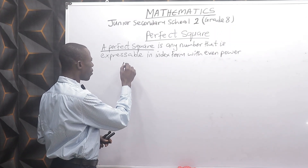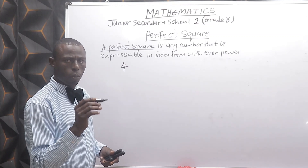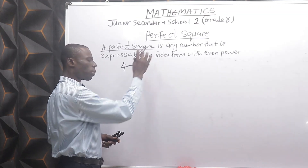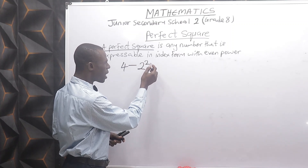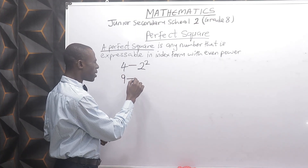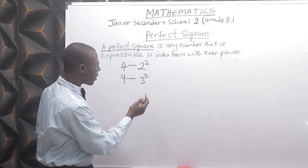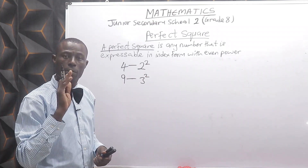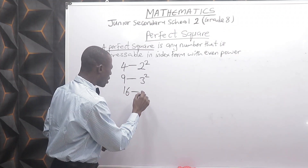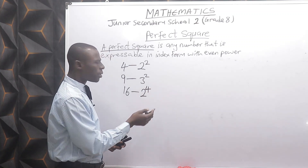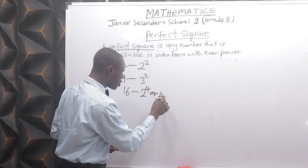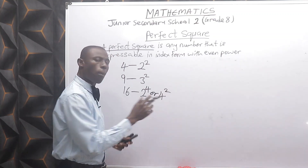An example is 4, which is a perfect square because it is expressible in index form as 2 raised to power 2 — the even power 2 makes it perfect. Also, 9 is 3 squared, and having the even power 2 makes it perfect. 16 is perfect, expressible as 2 raised to power 4 — the power 4 makes it perfect — or 4 raised to power 2, and the power 2 makes it perfect.